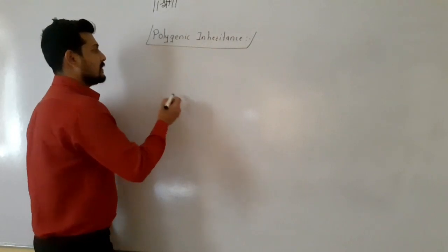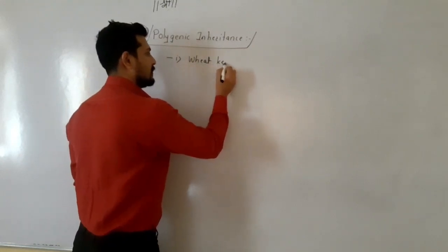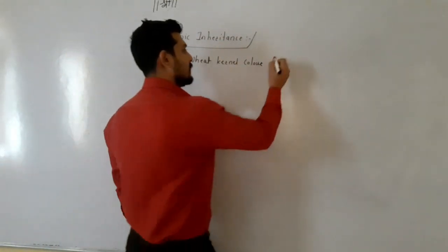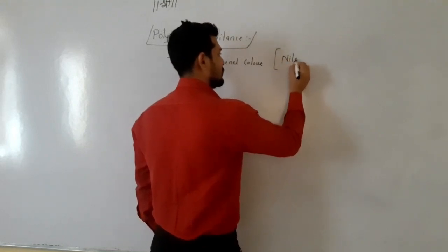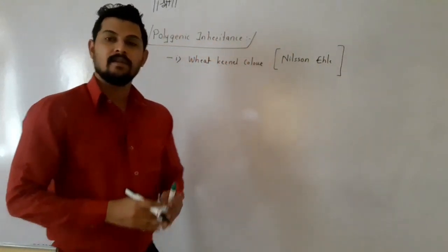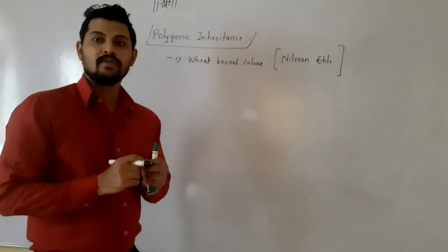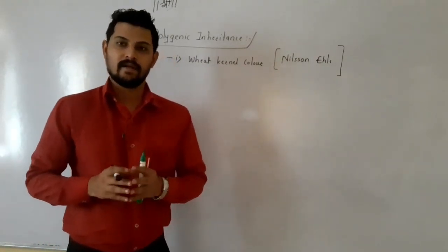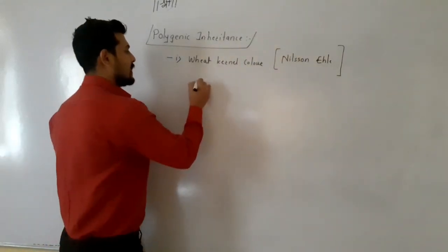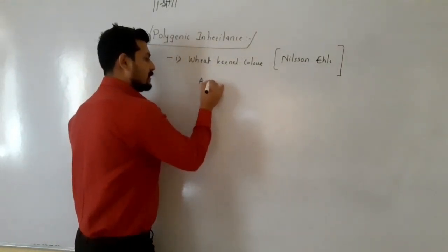As an example of polygenic inheritance, we can consider wheat kernel color. Polygenic inheritance was first studied by the scientist Nilsson-Ahle, who studied it on wheat kernel color. The cover of wheat can be of two colors: red and white.